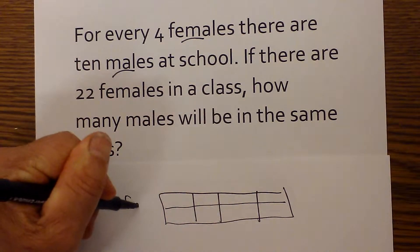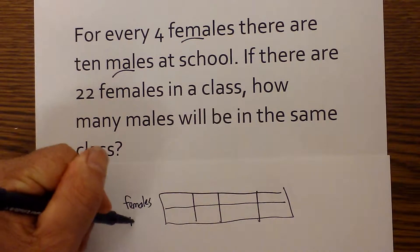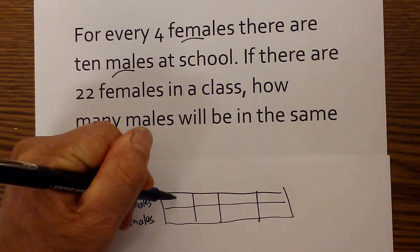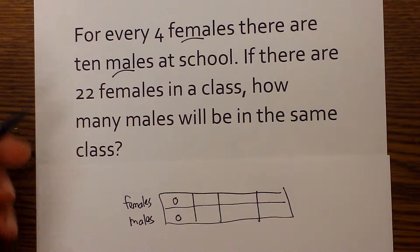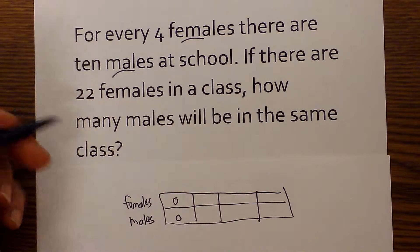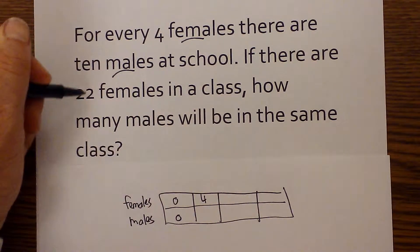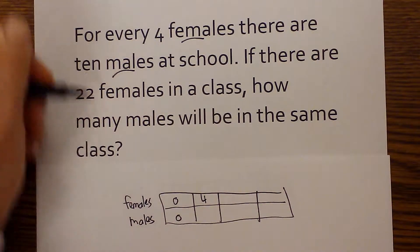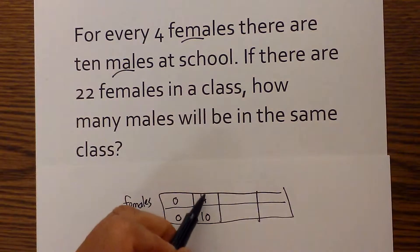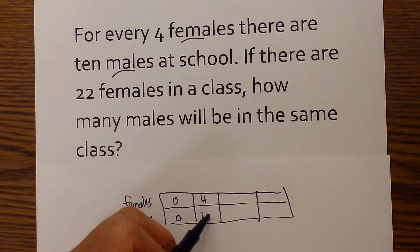So I will label females and males. I will start with 0. I will put in what information is provided. 4 females and 10. So I have 4 females in one class and 10 males.